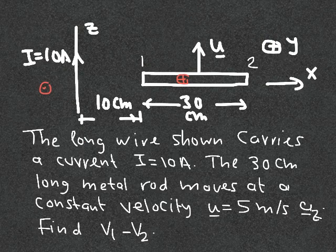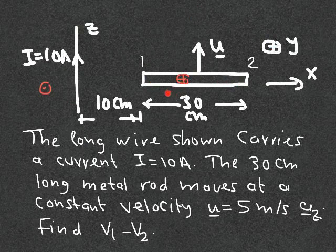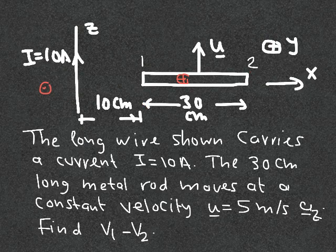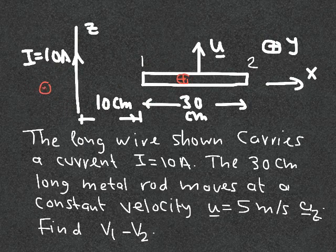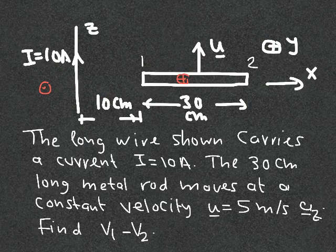The expression for the magnetic field of an infinite wire is B = (μ₀I)/(2π·ρ) · a_φ. The angular direction a_φ at every point on the rod is going into the page, which is simply the a_y direction. The distance from the wire to each point on the rod we call x, where x changes from 0.1 to 0.3 meters. So the magnetic field on the rod is in the a_y direction and a_φ is replaced by a_y, with ρ replaced by x.